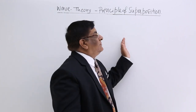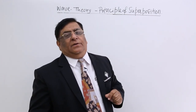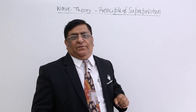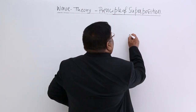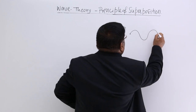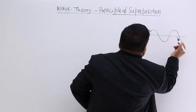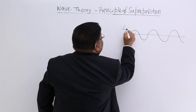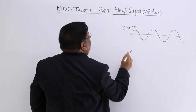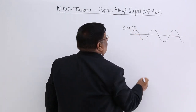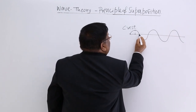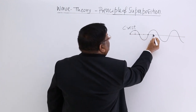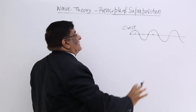We know that light travels in the form of waves. When it travels in the form of a wave, at any one instant if you make a graph of it, we know the graph of any wave looks like this — it has a crest where the amplitude of light is maximum, and a trough where the light is minimum, alternating like this.